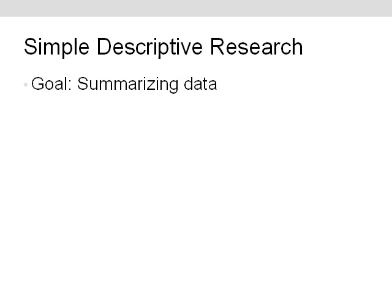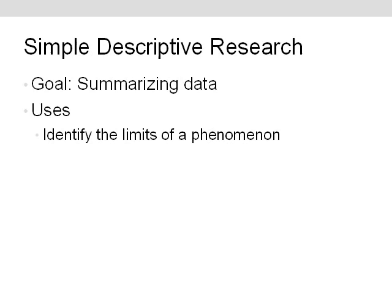Starting off with descriptive research — the overall goal is to summarize data when there's a whole lot of information out there and you want to make sense of it. You're not yet looking at relationships between variables or cause and effect, it's just: what do we know? Sometimes you want to identify the limits of a phenomenon, especially if it's a new phenomenon. Something like social media use — how many people are doing it, how much, in what ways? Or bath salts — how prevalent is that? Getting hard data on a phenomenon is an important first step in research.